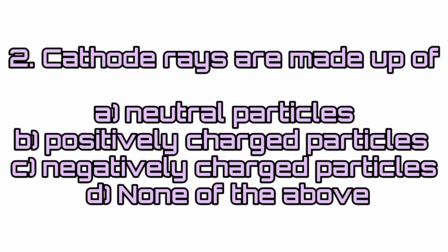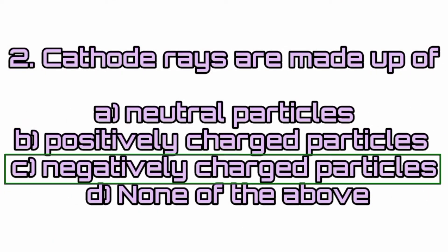Question 2: Cathode rays are made up of? Answer: Option C — negatively charged particles. Cathode rays are made up of negatively charged particles.